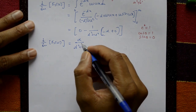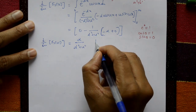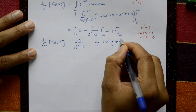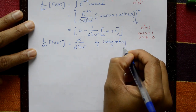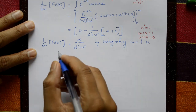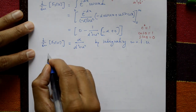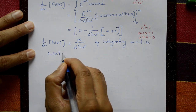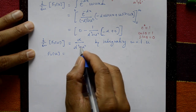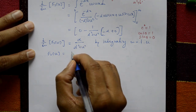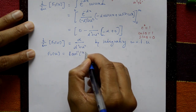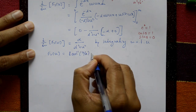Now integrating both sides with respect to u, the left-hand side becomes Fs(u), and the integration of alpha over (alpha squared plus u squared) gives tan inverse of u over alpha, plus a constant c. This is equation number 1.